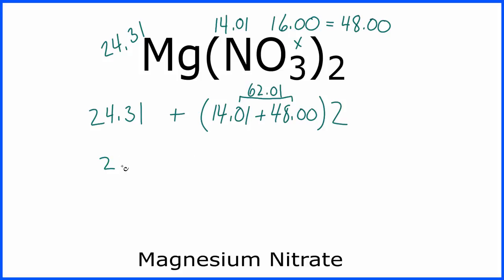And now I'll have my 24.31 plus 2 times 62.01, that's 124.02, and that equals 148.33.